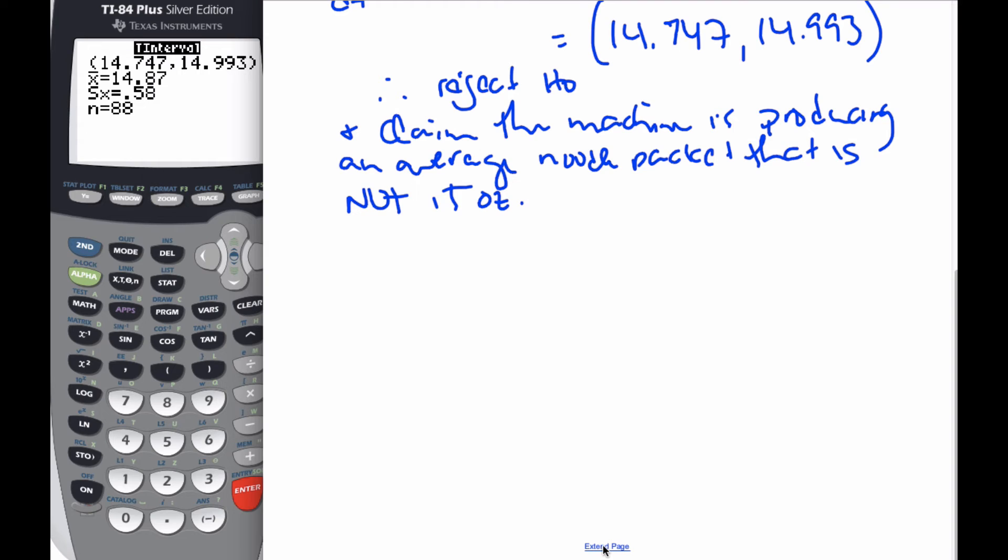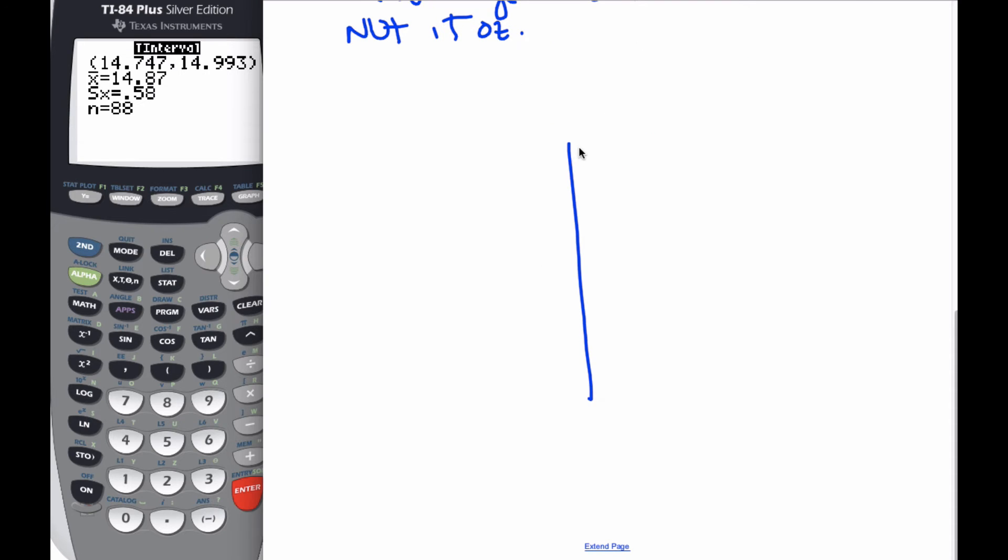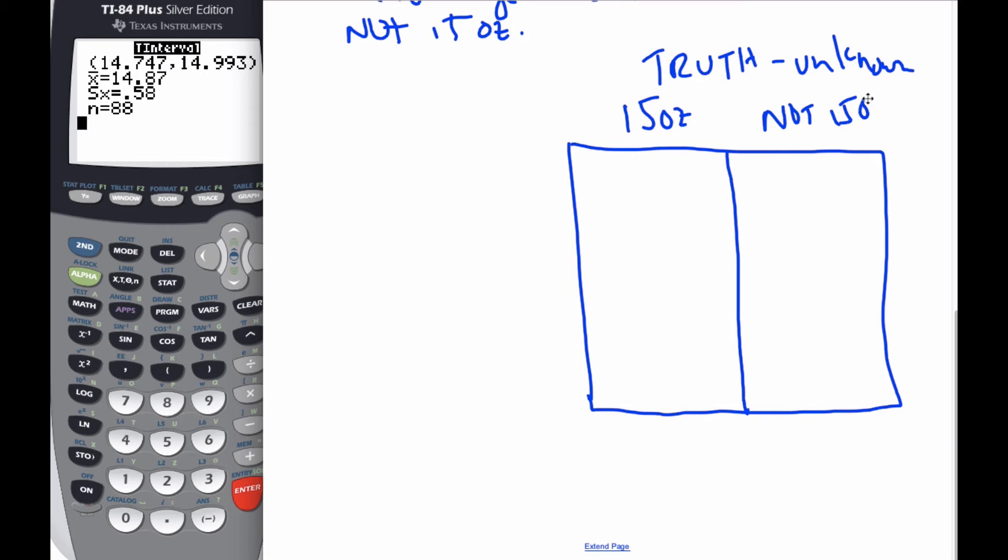In reality, we know that there is a truth out there, and this truth is unknown. We have no idea what is happening to our machine. We know that it could be making 15 ounce packages or it's not making 15 ounce packages.